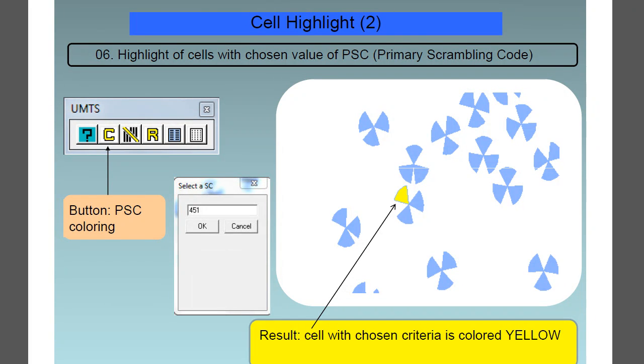The next feature is feature number 6, and that's the highlight of cells with the chosen value of the primary scrambling code, or PSC. You can see the results. The cell with the chosen criteria is colored yellow in this example.